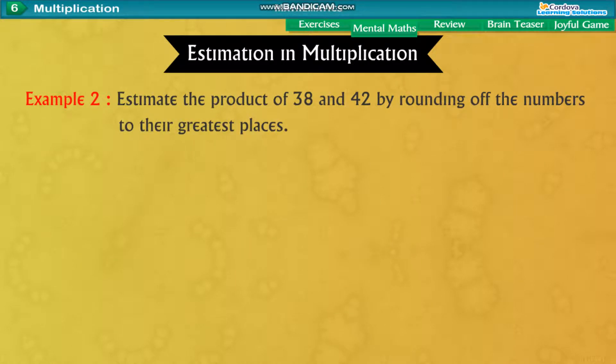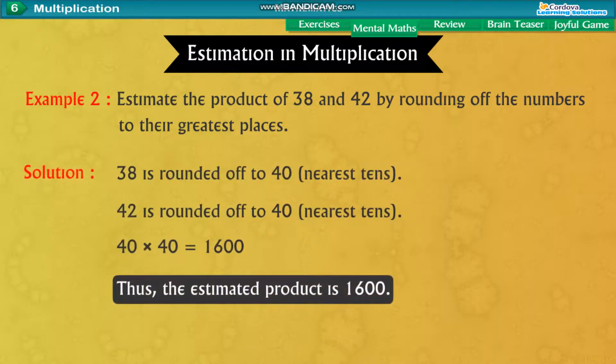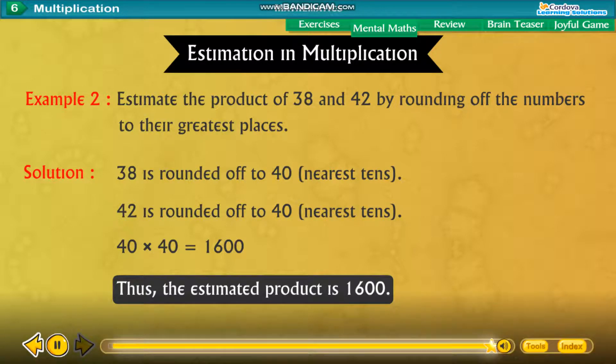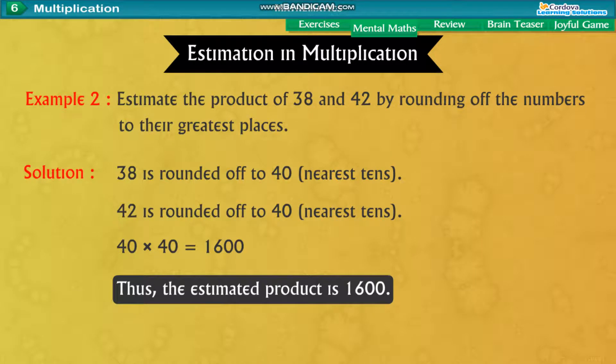Example 2. Estimate the product of 38 and 42 by rounding off the numbers to their greatest places. Solution. 38 is rounded off to 40 nearest tens. 42 is rounded off to 40 nearest tens. 40 into 40 equal to 1600. Thus, the estimated product is 1600.